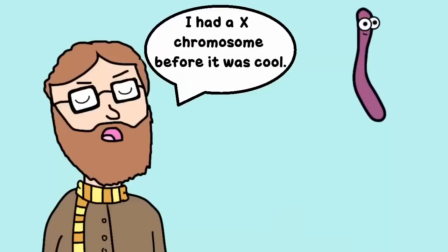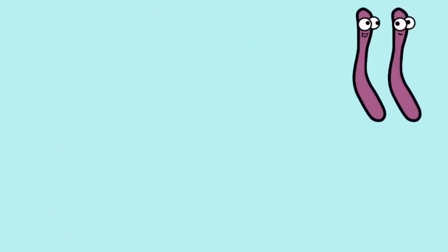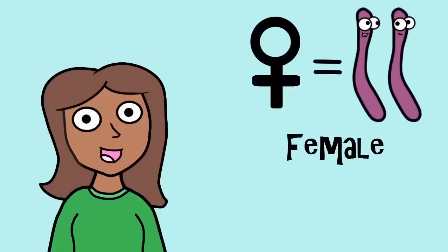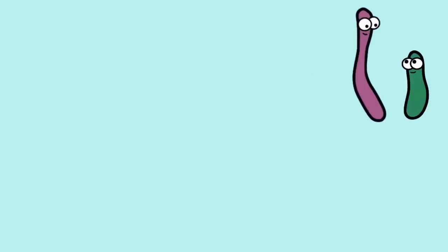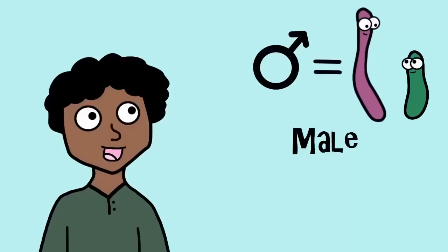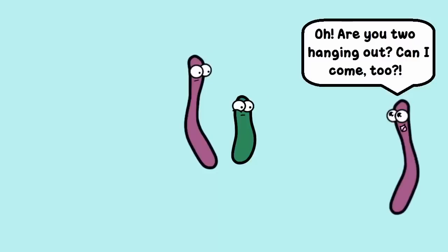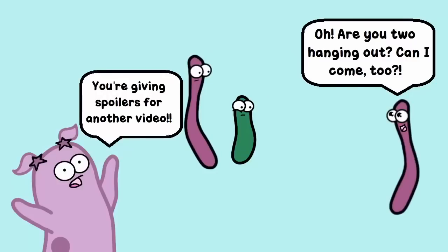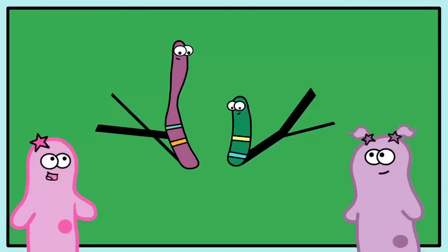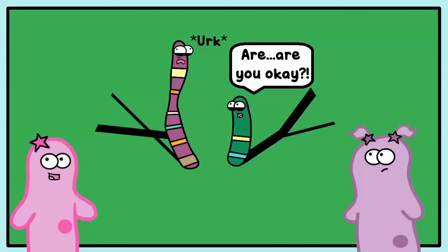Everyone has an X chromosome. But if you have another X chromosome — meaning you have two X chromosomes — you are female. And if you have a Y chromosome — meaning you have an X and a Y chromosome — you are male. There are also genetic disorders where you can have extra copies of sex chromosomes, but we will not go into that in this clip.